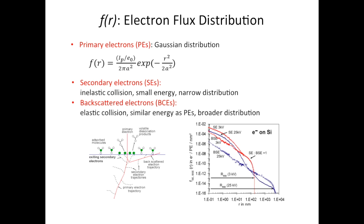We also need to take into consideration the secondary electrons and backscatter electrons. The lower left image shows how these electrons are generated — they are actually generated along the primary beam injection path. But what really counts is the number of electrons that can escape from the bulk to the substrate surface. In the right image, we can see the distribution of both electrons — the red curve corresponds to the secondary electrons, while the blue curves correspond to the backscatter ones.